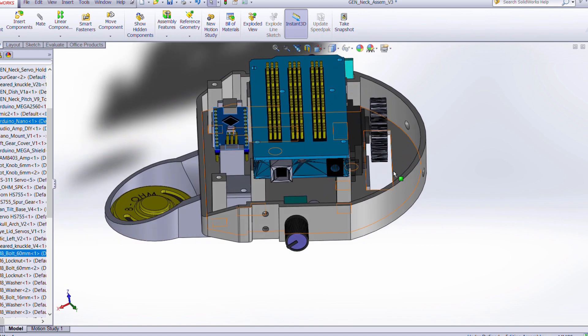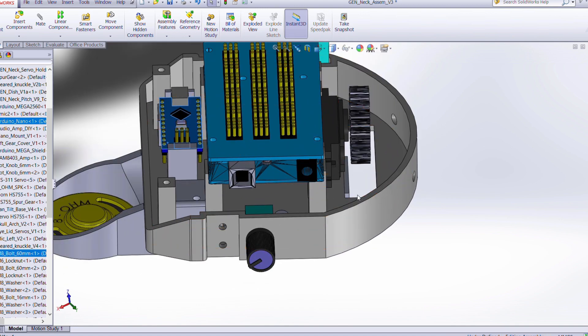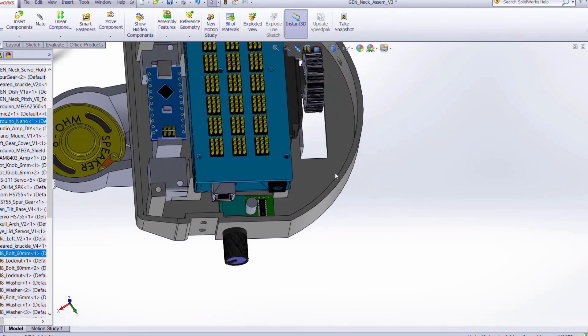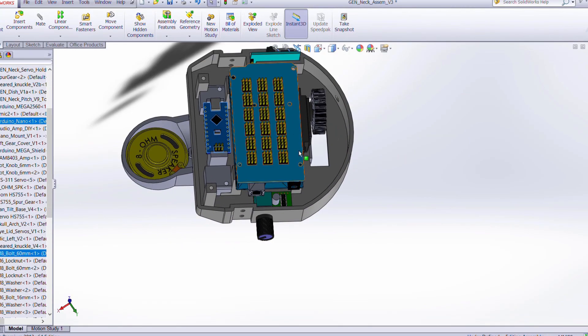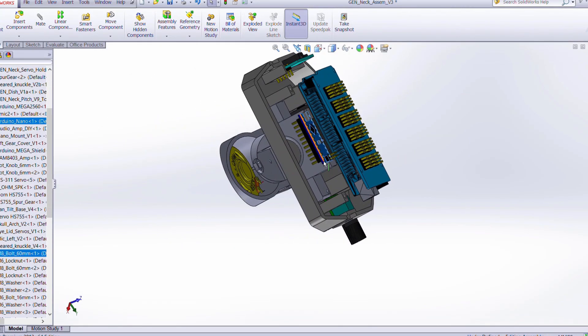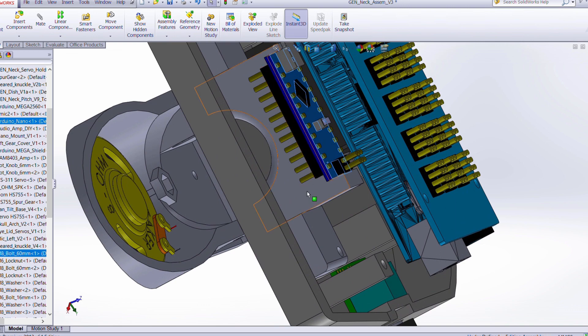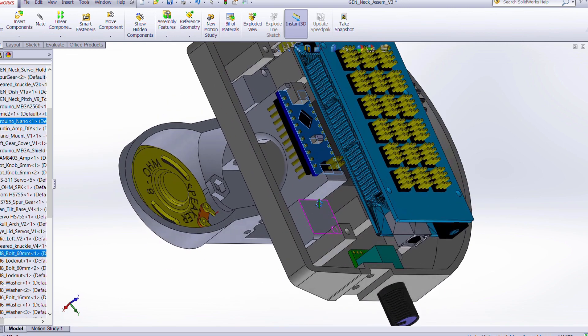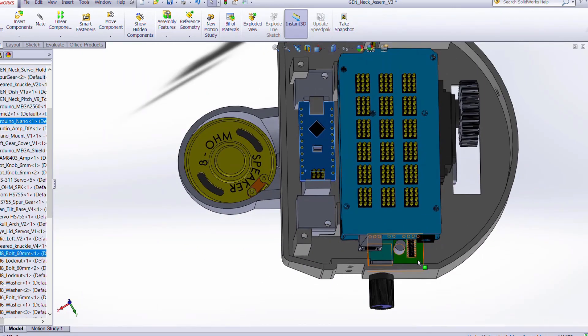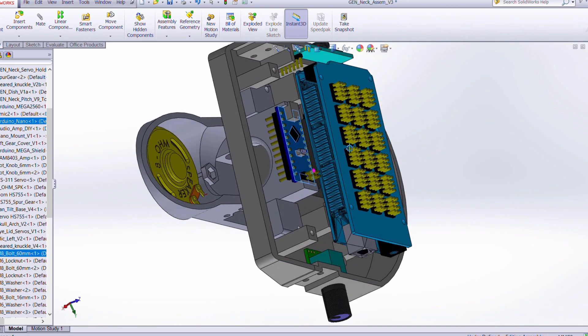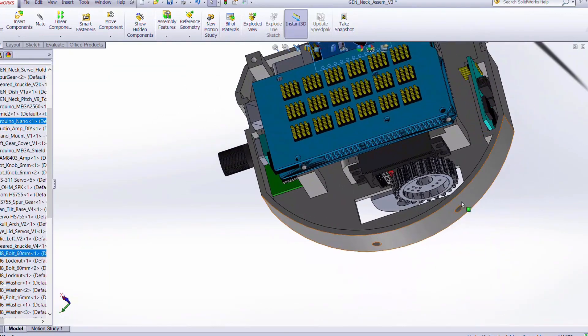So here we have just a look at the electrical dish here. We have room to mount an Arduino Mega plus the shield, and then the Arduino Nano and the mount that I spoke of earlier for that. We have room for a small audio amplifier and of course an 8 ohm speaker.